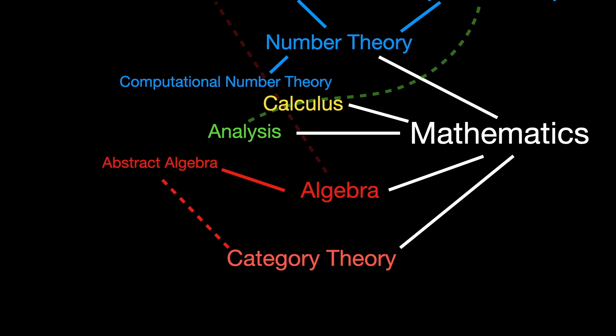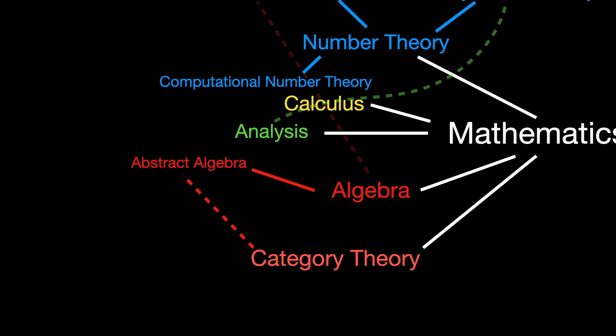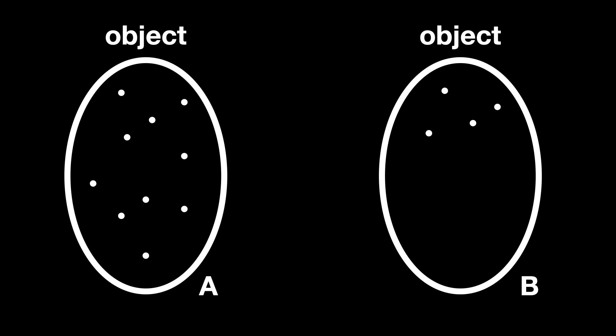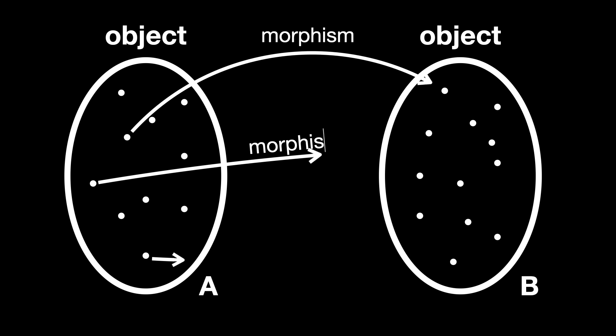Category Theory. The main idea in Category Theory is to focus on relationships between objects rather than the objects themselves. A category consists of objects and morphisms, also called arrows or maps, between those objects.